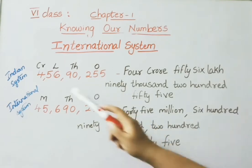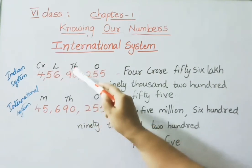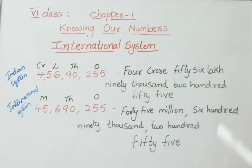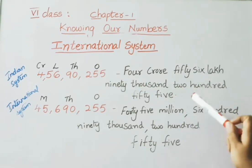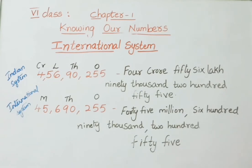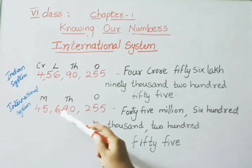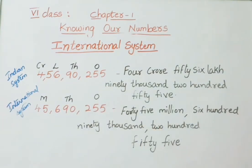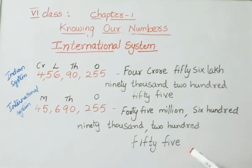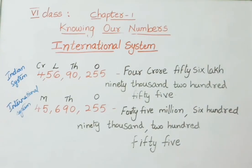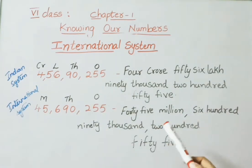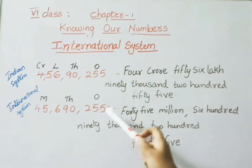For example: four crore 56 lakh 90,255 — we write the number, and in the International system the same number is 45 million, 690 thousand, 255. In word form: 45 million, 690 thousand, 255. After each period value we separate them using a comma: 45 million comma 690 thousand comma 255.